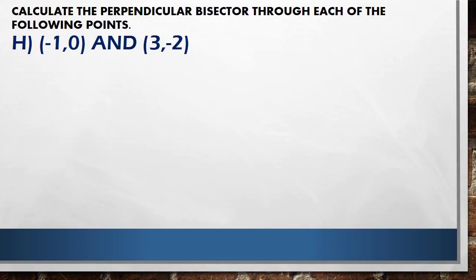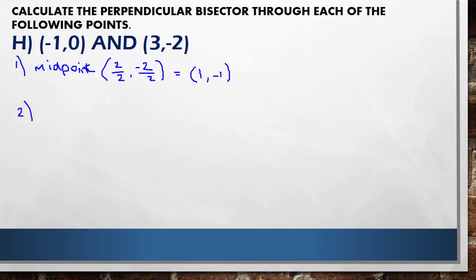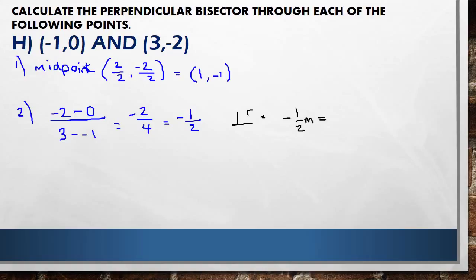One more to do — let's go through the steps. First: the midpoint. Minus 1 plus 3 is 2, over 2 gives 1 for the x part. Then minus 2 over 2 gives minus 1 for the y part, so the midpoint is (1, -1). The gradient: y2 minus y1 is minus 2 over x2 minus x1 which is 3 minus minus 1, giving minus 2 over 4, which simplifies to minus a half.